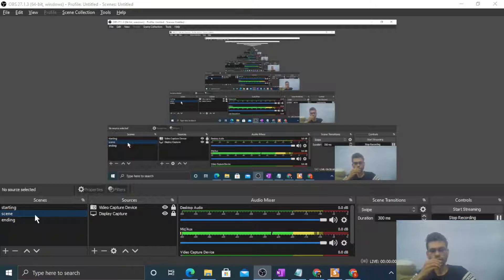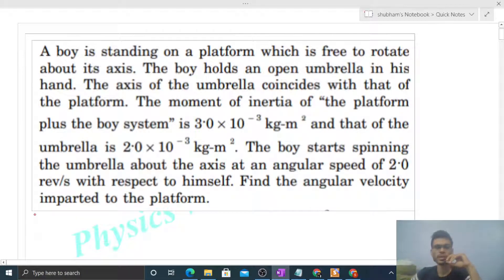Okay, hi everyone. Today let's discuss this interesting problem. It says a boy is standing on a platform which is free to rotate about its axis. The boy holds an open umbrella in his hand. The axis of the umbrella coincides with that of the platform.